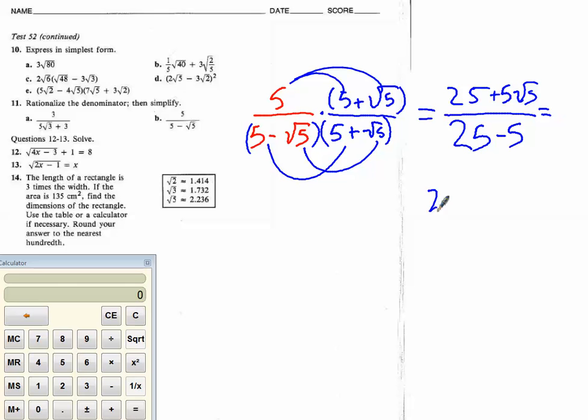So, then we get 25 plus 5 root 5 over 20. Now, is there a number that goes into all of them? And obviously, you'll tell me that 5 goes into all of them. So, again, this is going to be like saying 25 over 20 plus 5 root 5 over 20.